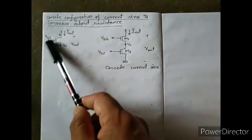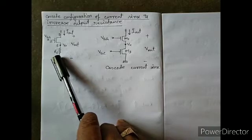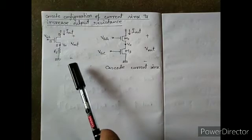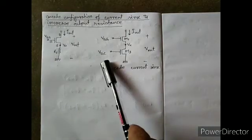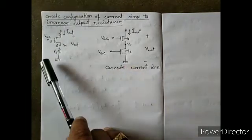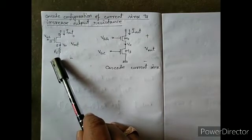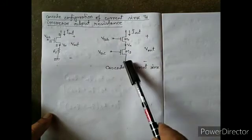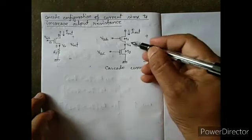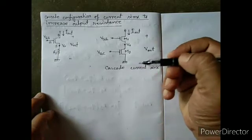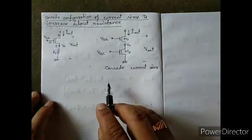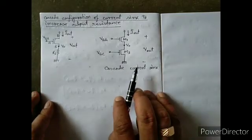Here this is the previous case where we have used a resistor across the source terminal to increase the output resistance. Now in the cascode configuration of current sink, we use a common gate MOSFET. Instead of a resistor, we have used a common gate MOSFET across the source terminal of M1. This is the cascode current sink configuration.